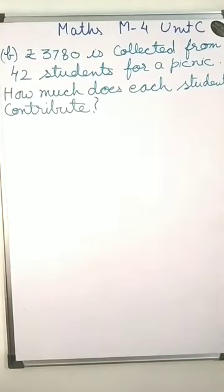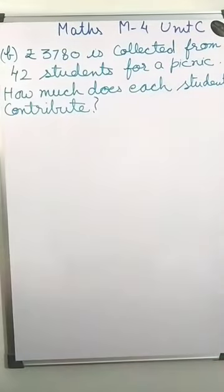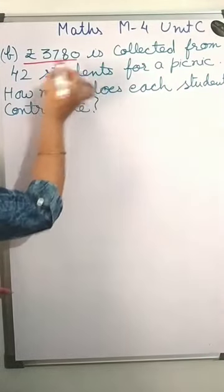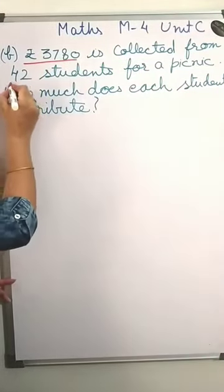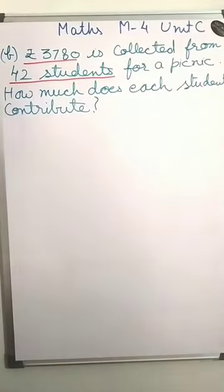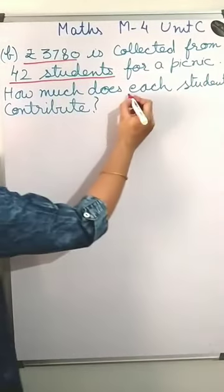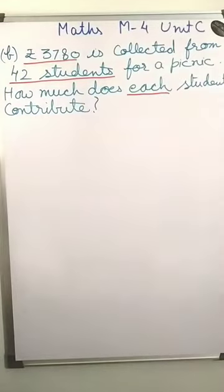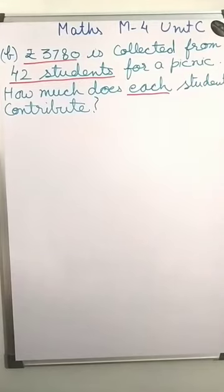Now the next question is: rupees 3780 is collected from 42 students for a picnic. How much does each student contribute? Each means 1. So again we have to calculate the value of 1 student, so we divide.